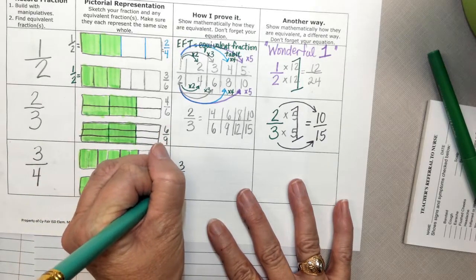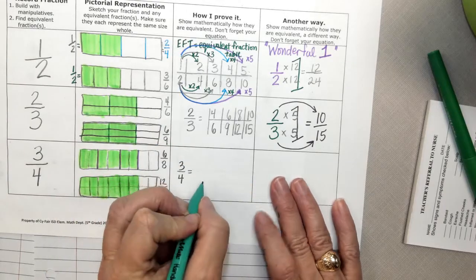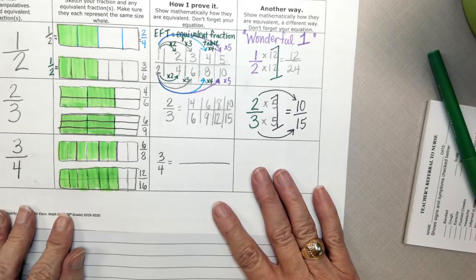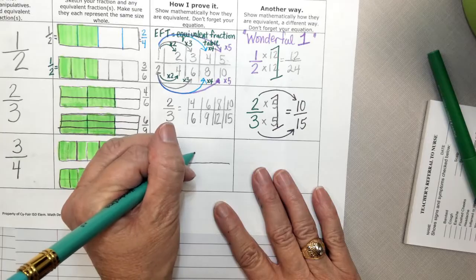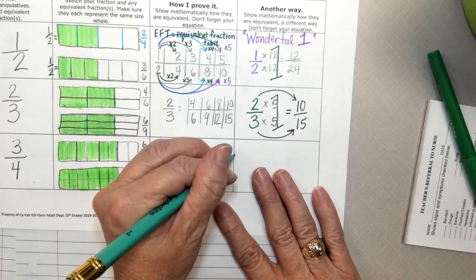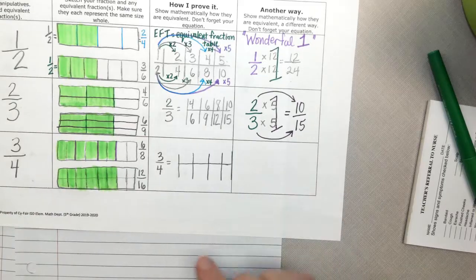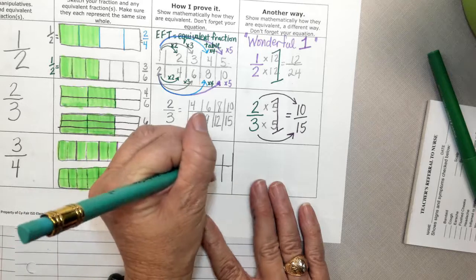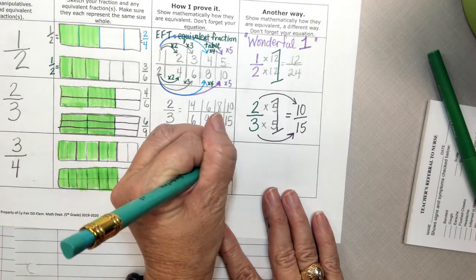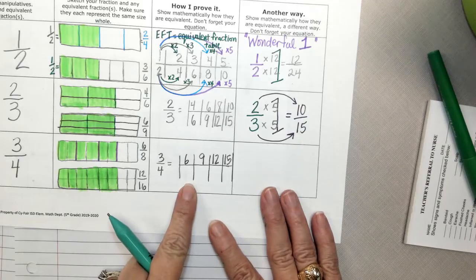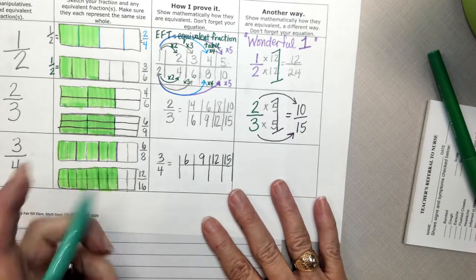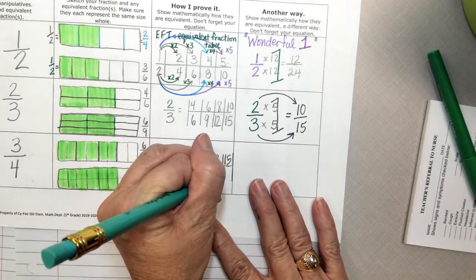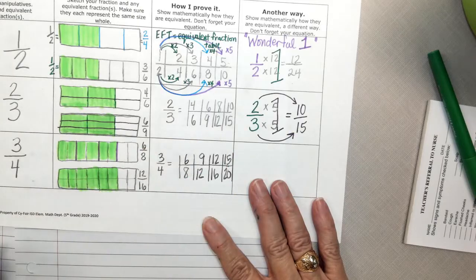We need to prove that they're the same by making an EFT. What are we going to count by on the top to make our EFT? 3. 3, 6, 9, 12, 15. What do we want to count by on the bottom? 4. 4, 8, 12, 16, 20.